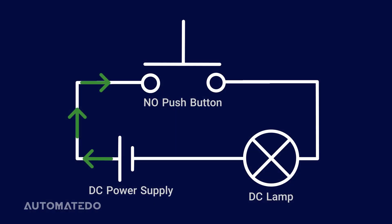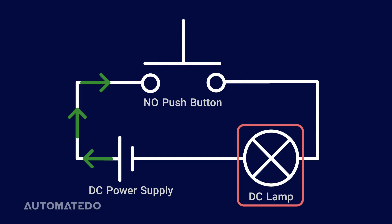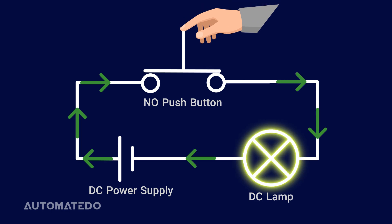In the wiring diagram ahead, a normally open push button is shown as the control element to turn on a lamp. When untouched, the normally open push button keeps the circuit disconnected as the contacts do not meet. Once the button is pressed, the contacts join, enabling electricity to move through the system and turn on the lamp.